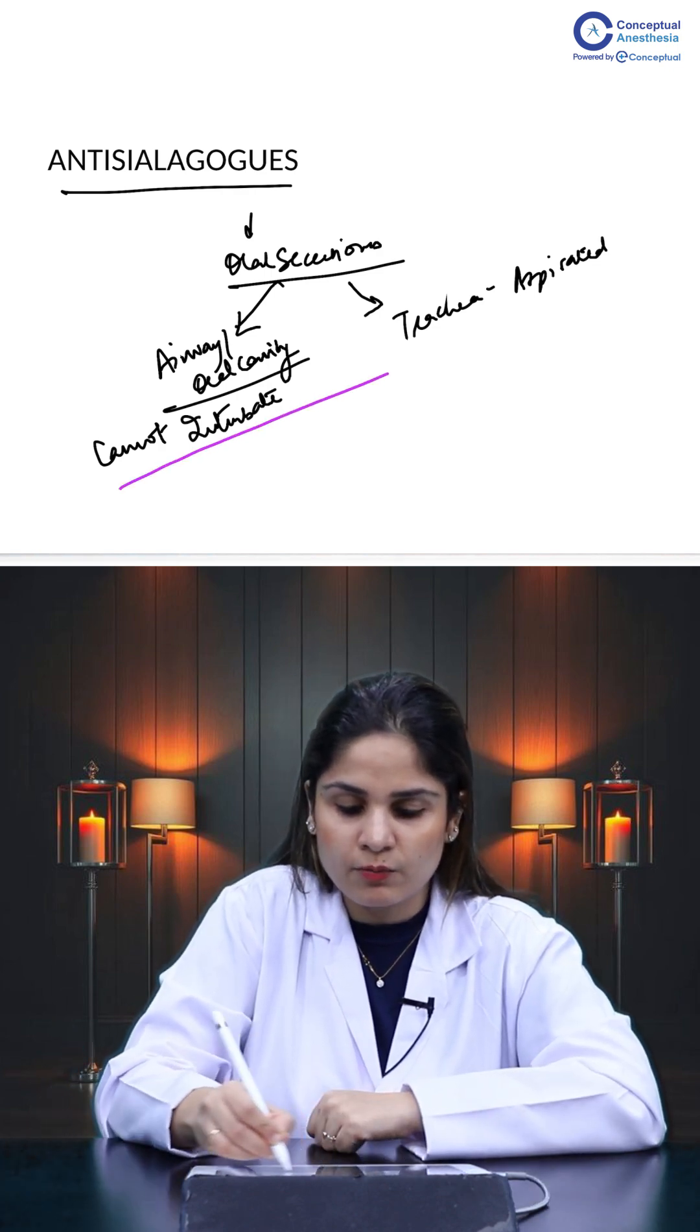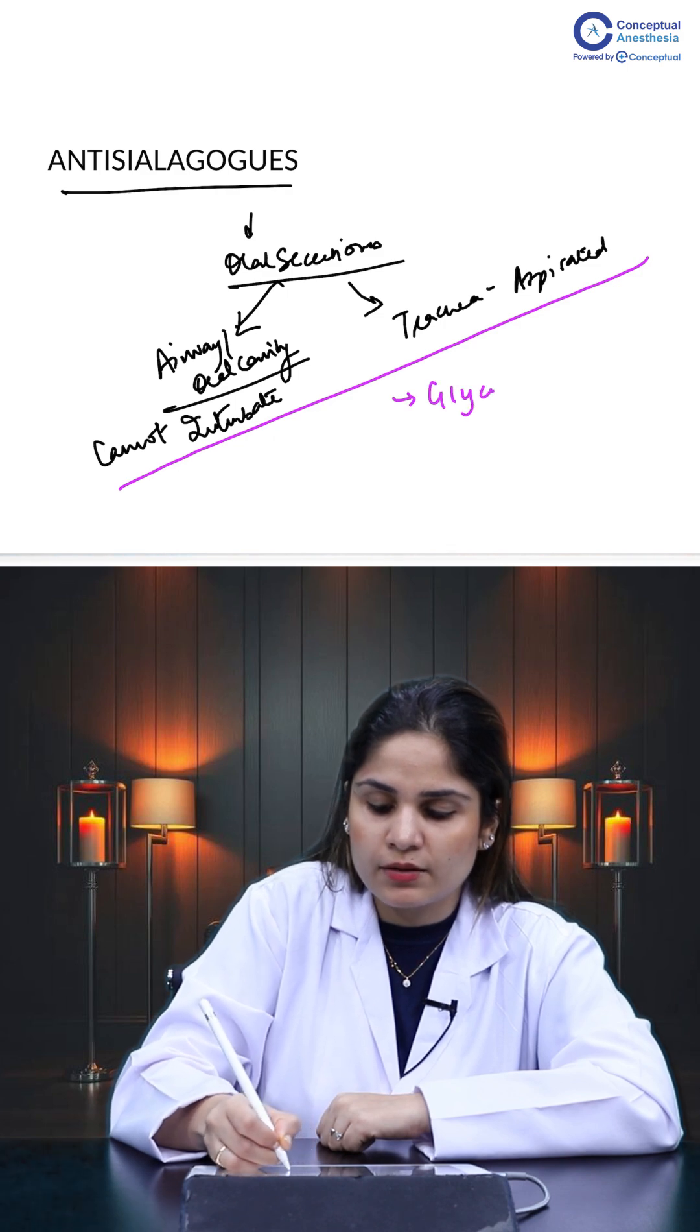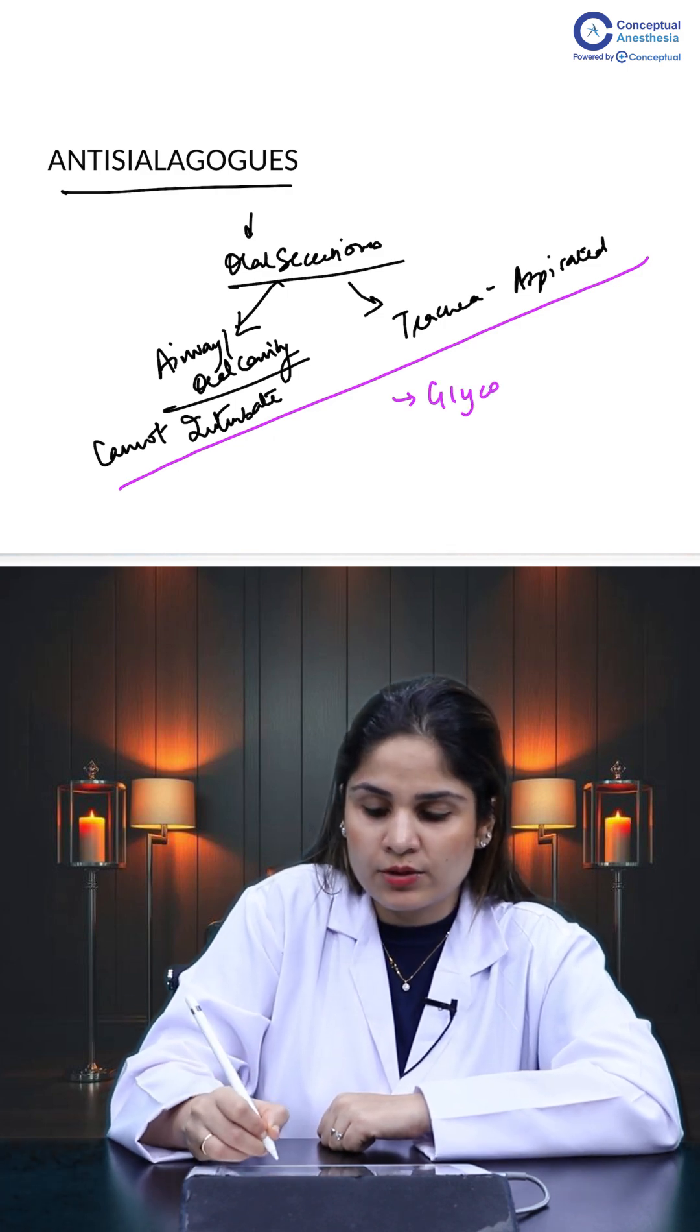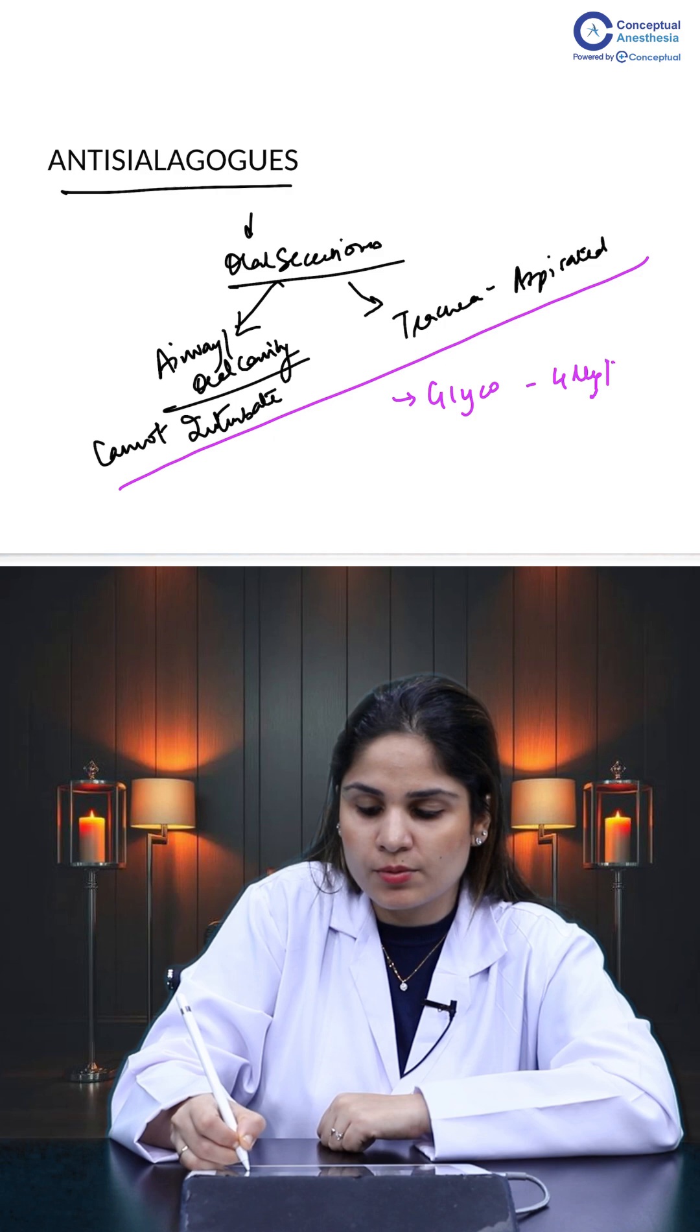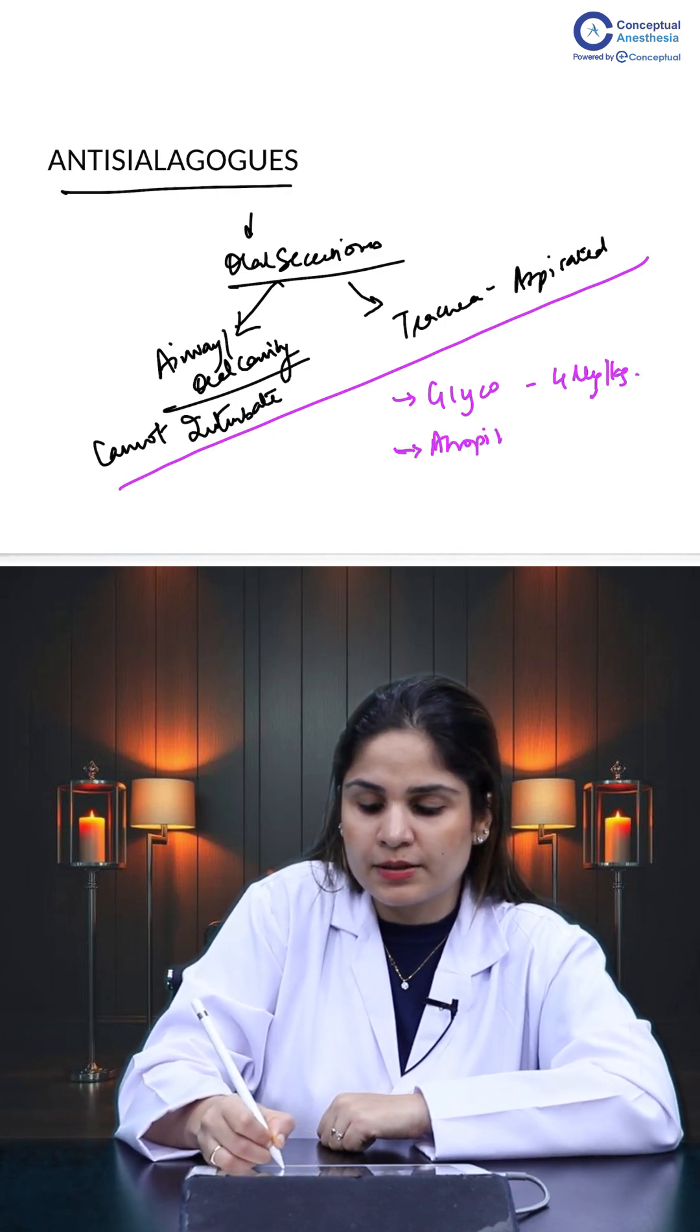To take care of both of these situations, we use antisialagogues. In antisialagogues, we prefer drugs like glycopyrrolate, which is given in the dose of 4 micrograms per kilogram, or we can give atropine to our patient.